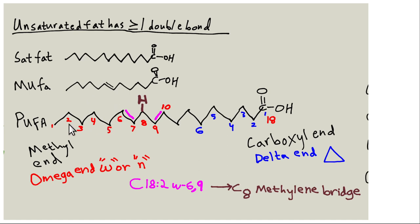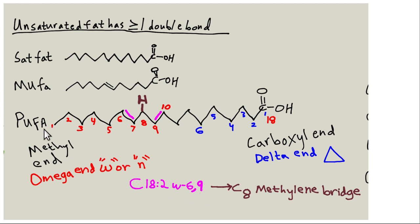A MUFA has one double bond; a PUFA has two or more. Between the double bonds is a carbon called the methylene bridge, which has a weak grip on its electrons, so a hydrogen can be plucked off, initiating a cascade of reactions called lipid peroxidation. The carboxylic end is called the delta end, but for nutrition it's easier to use the methyl or omega end. For example, C18:2 omega-6,9 means 18 carbons with two double bonds at the sixth and ninth positions from the methyl end.